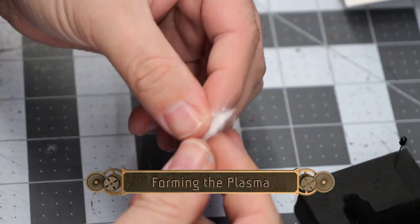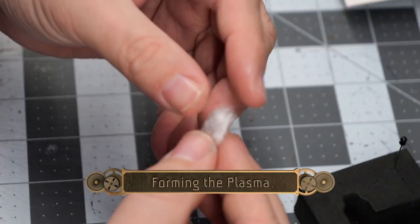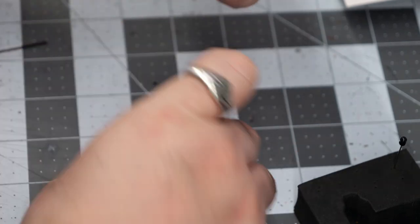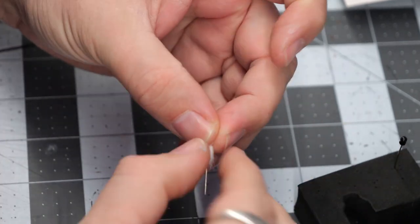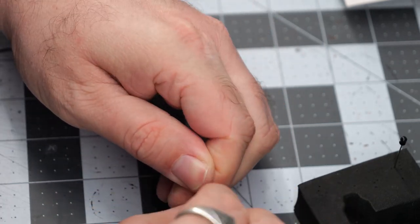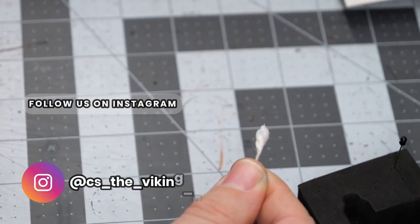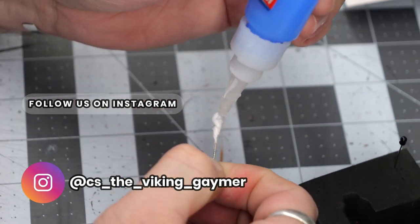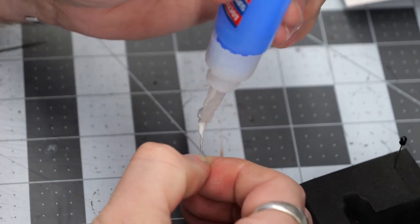Setting that aside to dry, we're going to form the plasma ball for the plasma shot. We're going to take a little bit of cotton, form it into a rough circle, wrap it around the head of the pin, and once we have the rough shape we like, we're going to twist it into place before super gluing it all together.